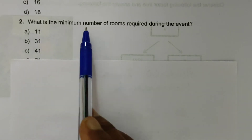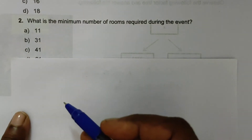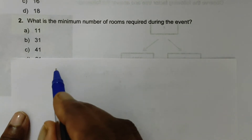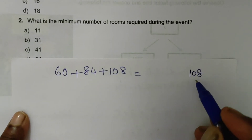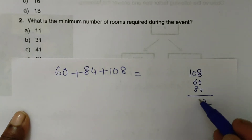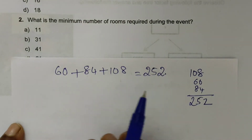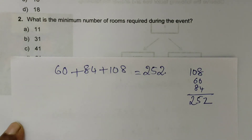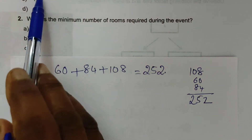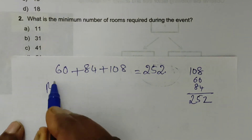Next question: What is the minimum number of rooms required during this event? The total number of participants is 60 plus 84 plus 108, which equals 252. The maximum number of participants that can be accommodated in each room is 12.